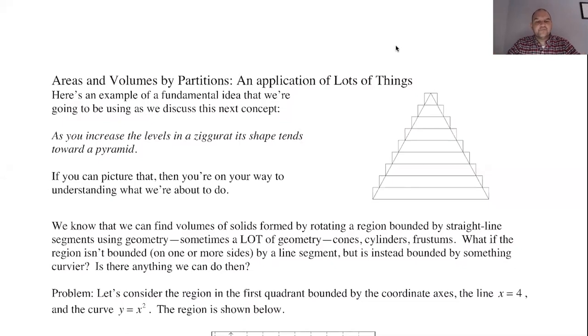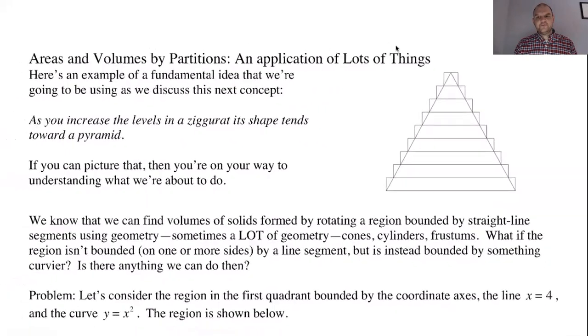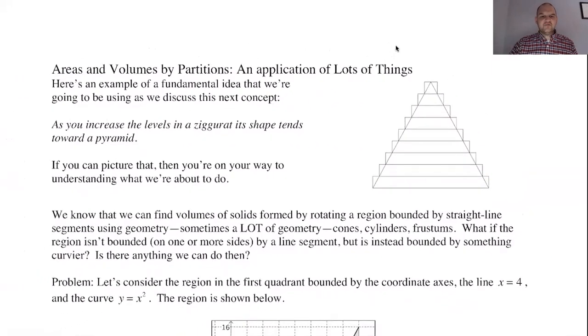These notes are about approximating areas and volumes by using something called partitioning. The basic idea, as I've always thought about it, is as you increase the levels in a ziggurat—that's a Mesoamerican type of pyramid, very common, looks like a cake with lots of layers—